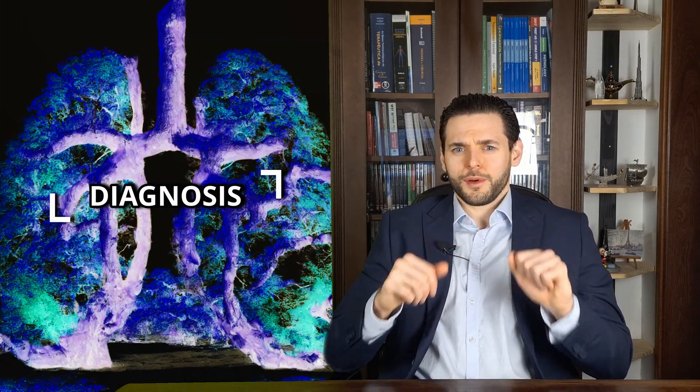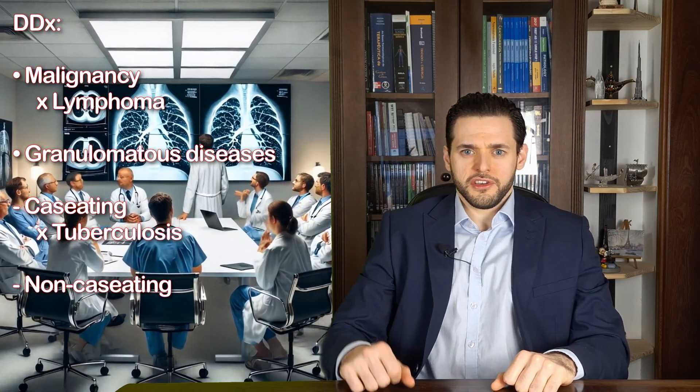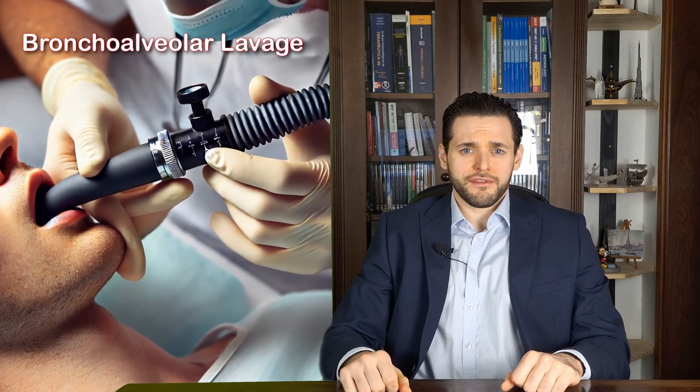An early step in investigating a patient with respiratory complaints is a chest X-ray or CT, which should reveal bilateral hilar lymphadenopathy and possibly pulmonary nodules. Differential diagnosis of sarcoidosis should include malignancy involving the lymph nodes, lymphoma, as well as other granulomatous respiratory diseases — both caseating such as tuberculosis, and non-caseating such as berylliosis or hypersensitivity pneumonitis. Bronchoalveolar lavage should reveal an elevated concentration of T lymphocytes and an elevated CD4-to-CD8 ratio, which is very specific. Serum calcium, ACE, and other markers such as soluble interleukin-2 receptor are sensitive but non-specific.